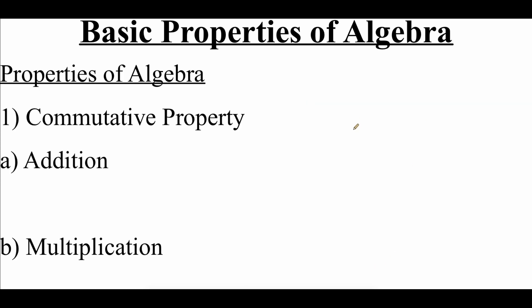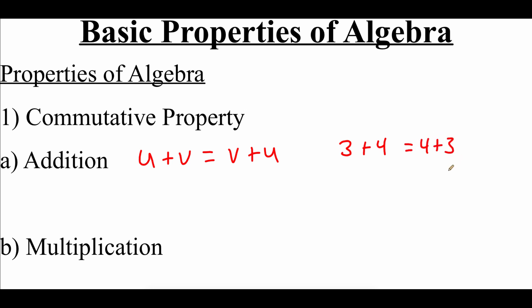Now we're going to look at some of the basic properties of algebra, starting with the commutative property. The commutative property holds true for both addition and multiplication. It says that we can do addition or multiplication in any order and get the same result. For addition, u plus v gives the same answer as v plus u — for example, 3 plus 4 is the same as 4 plus 3; the order doesn't matter, we still get 7.